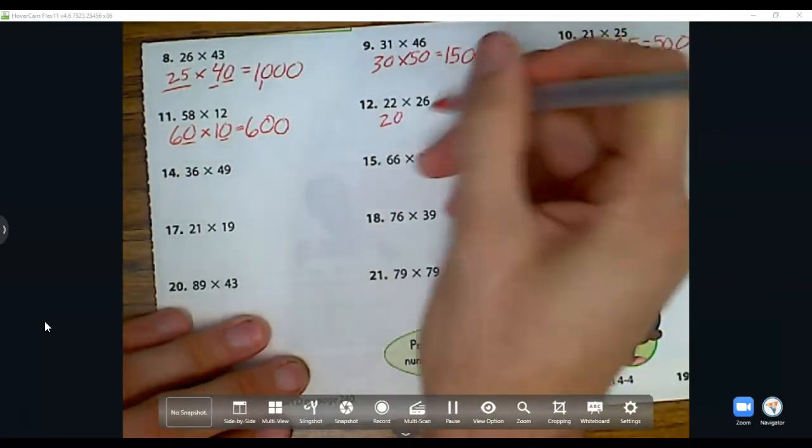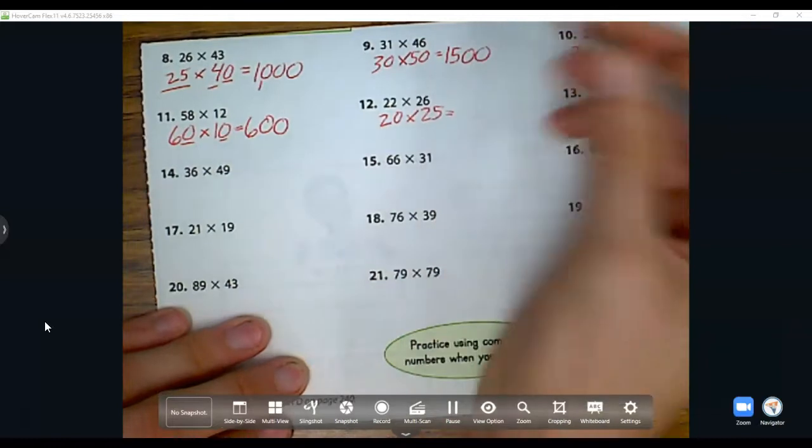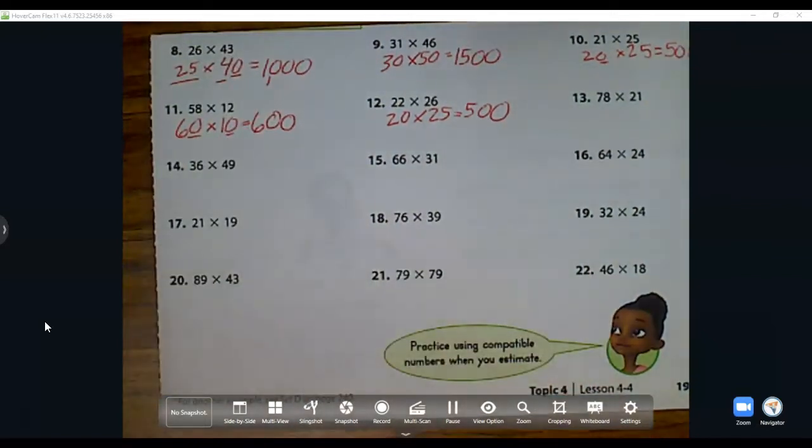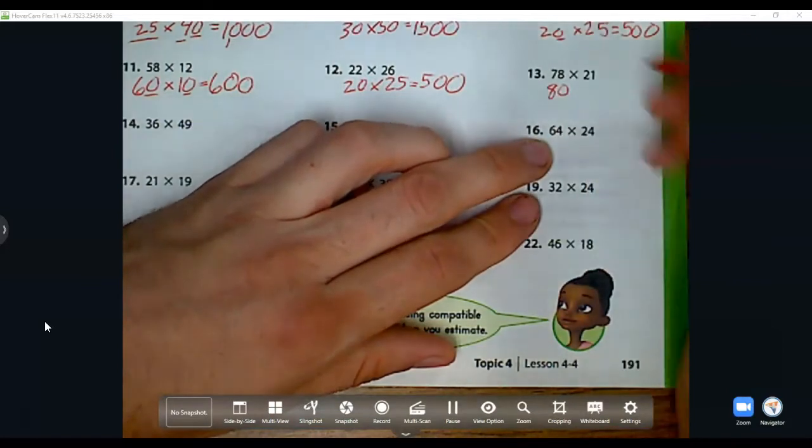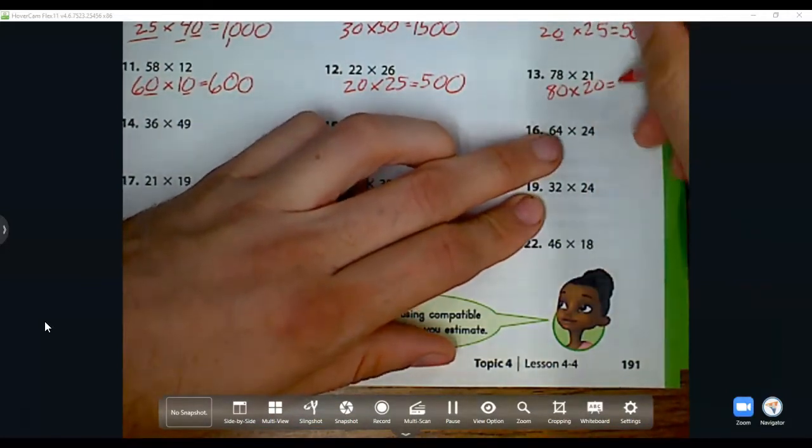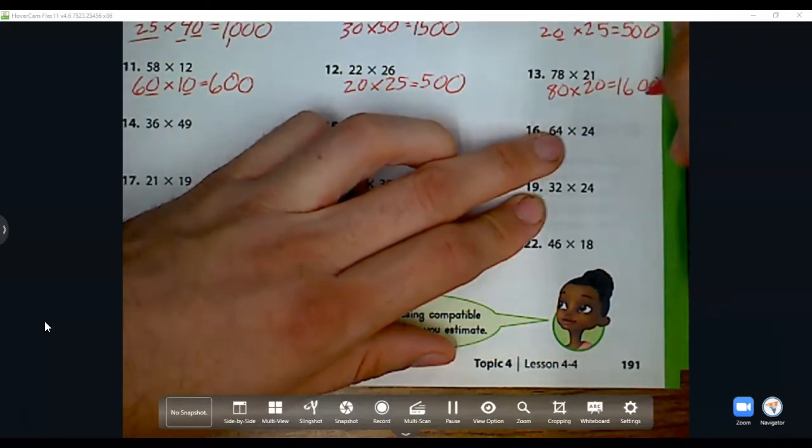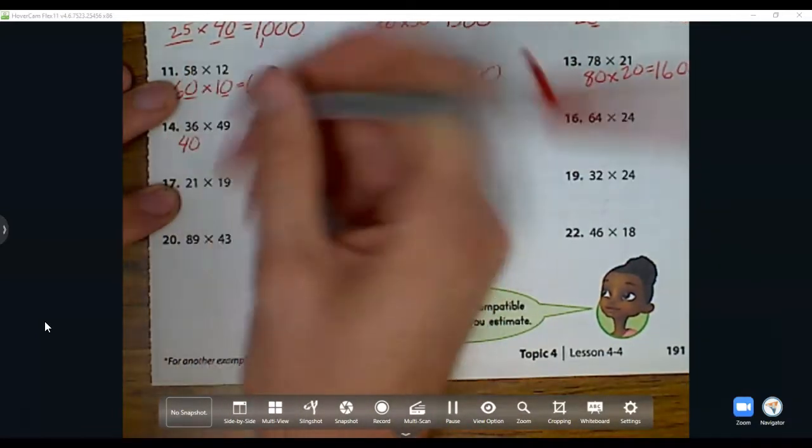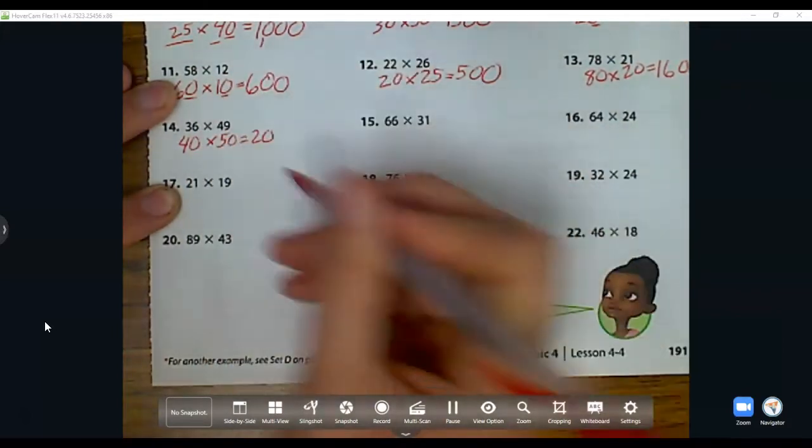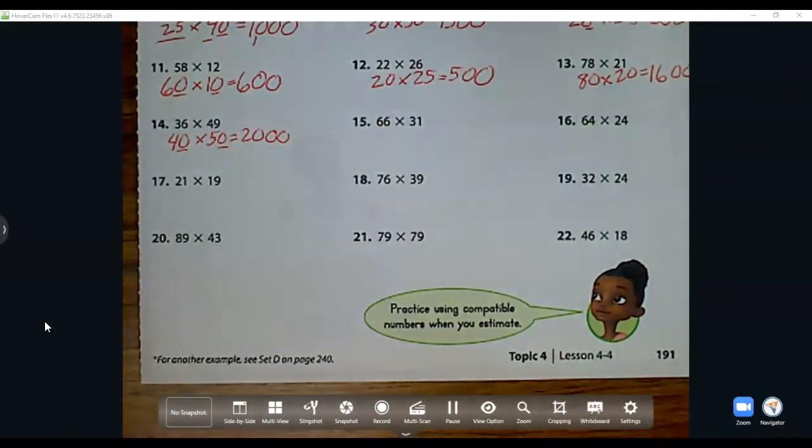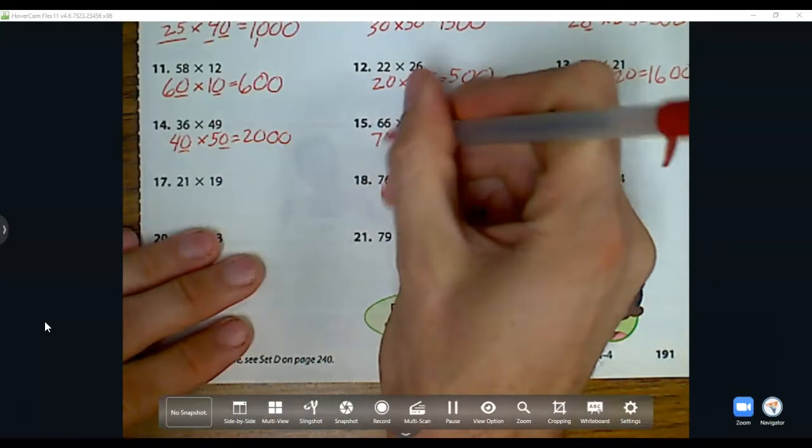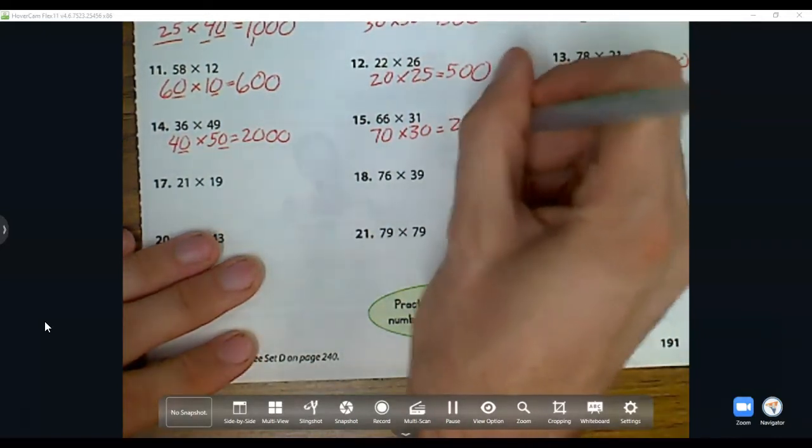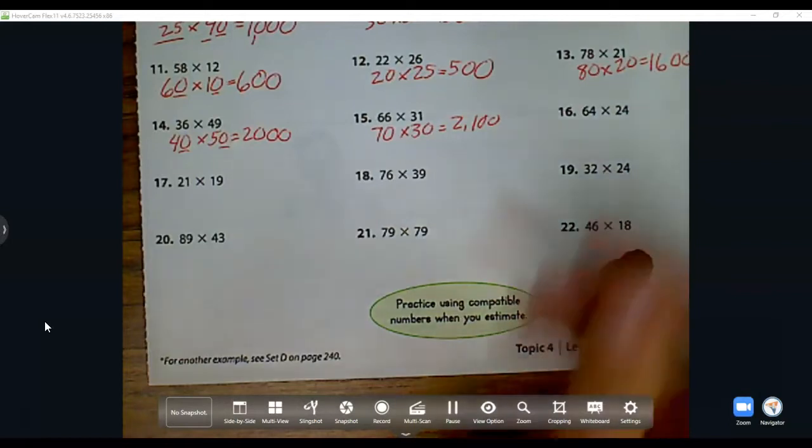Number 13: 22 is close to 20 times 26 is close to 25. 2 times 25 is 50, add that zero back on. 78 is close to 80, 21 is close to 20. 8 times 2 is 16, add those zeros back on. 36 is close to 40, 49 is close to 50. That's 2000, and I add those two zeros back on. 66 is close to 70, 31 is close to 30. 70 times 30 is 2100. Remember, my answer is going to be close to this estimate.